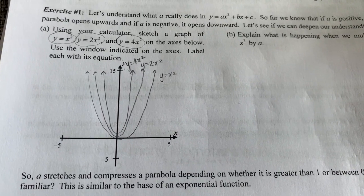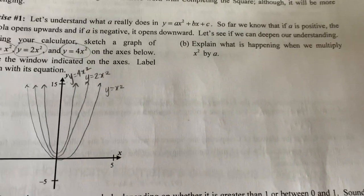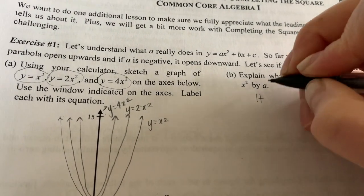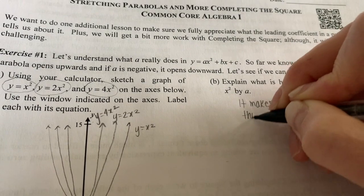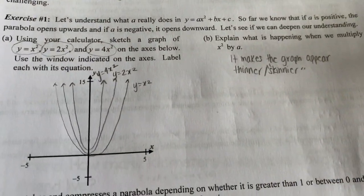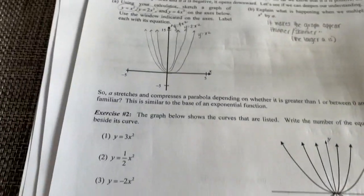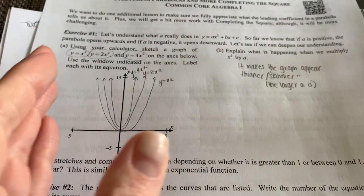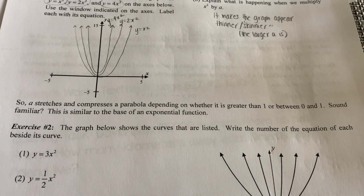So again, as the leading coefficient gets larger, the graph becomes thinner or skinnier. What's happening when we multiply x squared by a is it makes the graph appear narrower — or skinnier if you'd like. So a stretches and compresses a parabola depending on whether it's greater than 1 or between 0 and 1. If it's greater than 1, it compresses it, makes it skinnier. If it is between 0 and 1, that makes it wider.